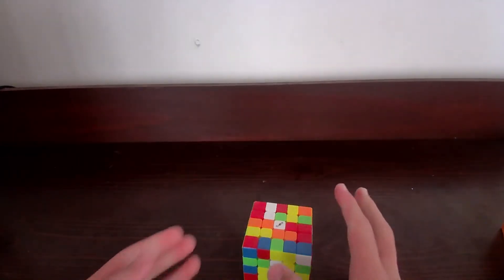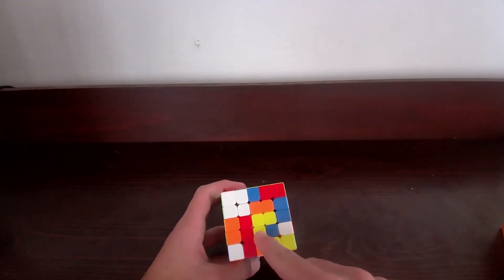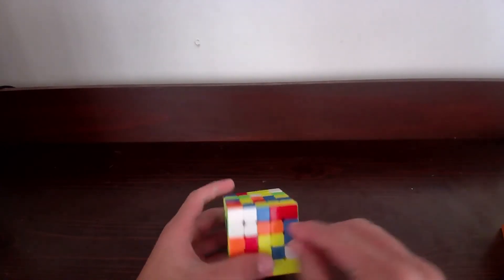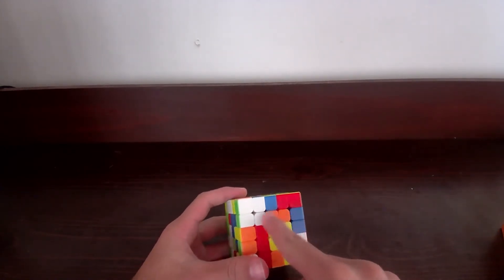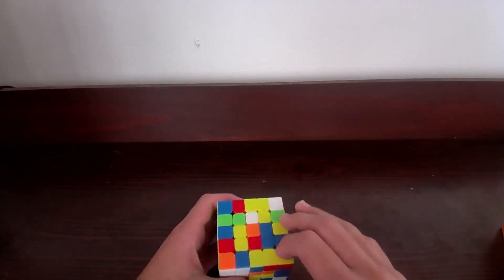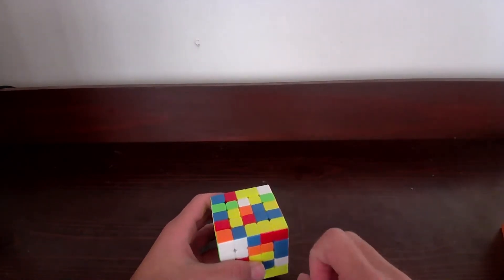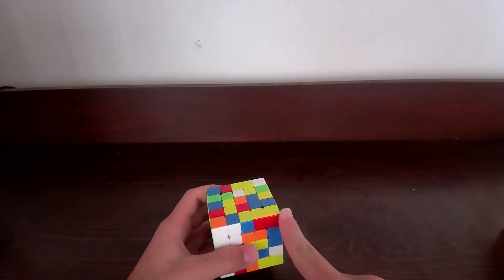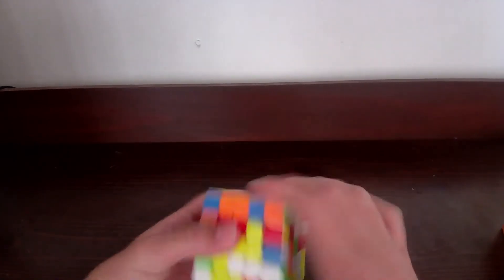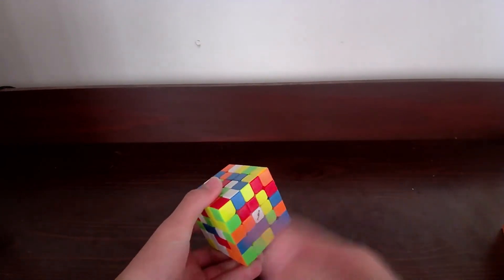So the method we're going to be using is called the Reduction Method, which basically turns the 5x5 into a center, edges, and a corner. So centers are just basically this 3x3 grid, edges are obviously just these 3 edges, and there are 12 of these triplets of edges, and the corners we don't have to worry about these since you can't really separate them. If I do this, you still have just 8 corners that are not touched.